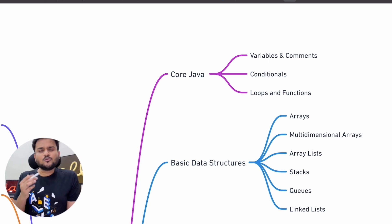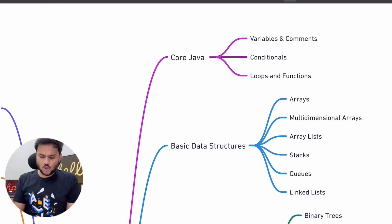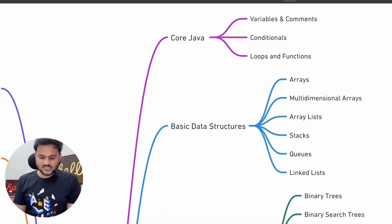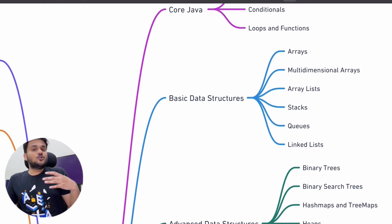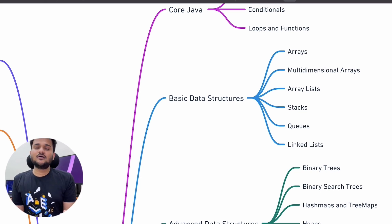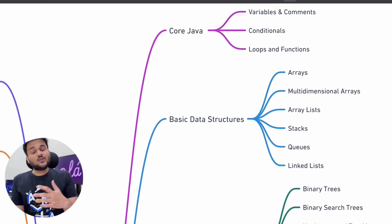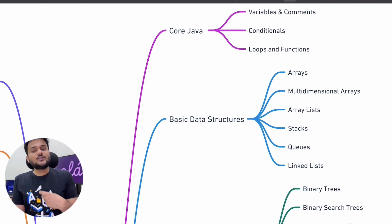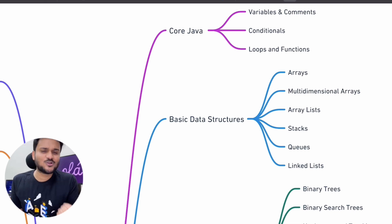We are going to talk about very simple concepts like variables, comments, conditionals, loops, and functions. We are going to help you understand everything from very simple to very complex Java code. We are going to give you tons and tons of debugging exercises so that you can ensure your grip on the Java language is as good as possible.